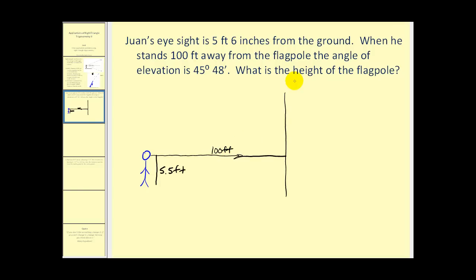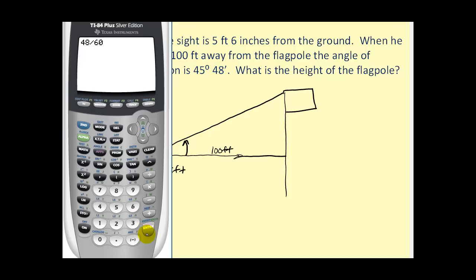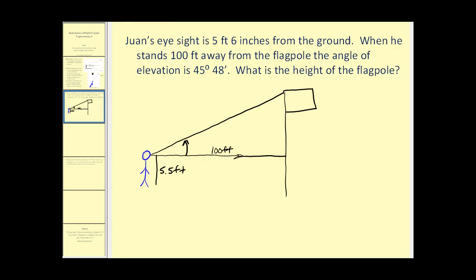We have a flag. The angle of elevation, this angle here, is 45 degrees 48 minutes. Let's go ahead and convert this 48 minutes to a decimal. We would take 48 and divide by 60, that's going to give us 0.8. So we have 45.8 degrees for our angle of elevation.